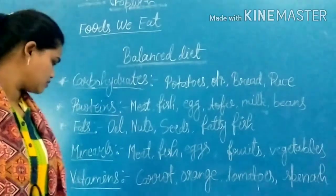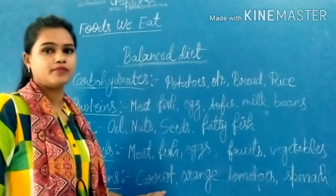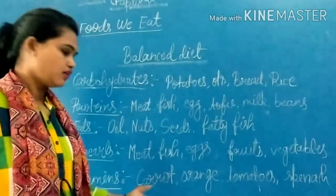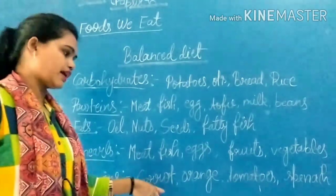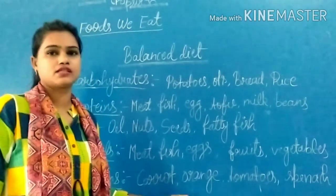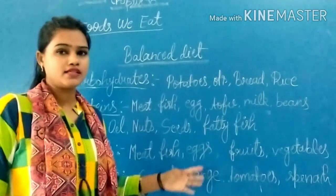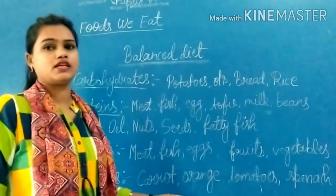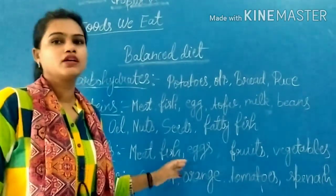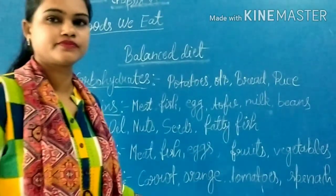And the last one is vitamins. This is also an important nutrient for our body and a necessary thing. Examples of vitamins are carrots, oranges, tomatoes, spinach, fruits, and vegetables. So these are the nutrients which are required for our body, necessary things for our body to stay fit and healthy. We should eat all types of food for growing and staying fit and healthy and also getting energy. Thank you.